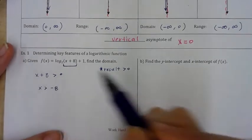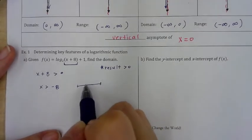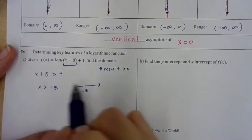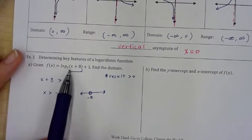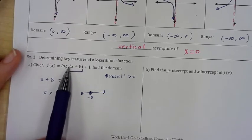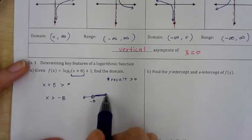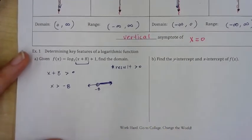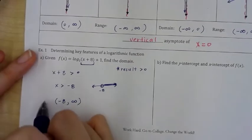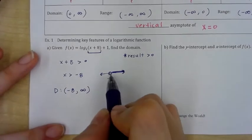To write the domain in interval notation, sketch a mini number line. Negative 8 is the boundary — we cannot include it because plugging in negative 8 gives a result of 0, and 2 raised to no power equals 0. So the domain is parentheses negative 8 comma positive infinity — open parenthesis because x cannot equal negative 8.